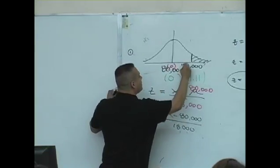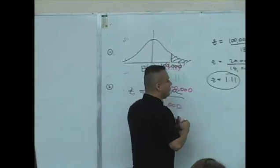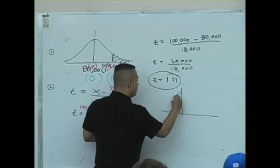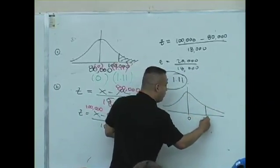$100,000 really is 1.11, meaning that that conversion looks like this. 0, 1.11.